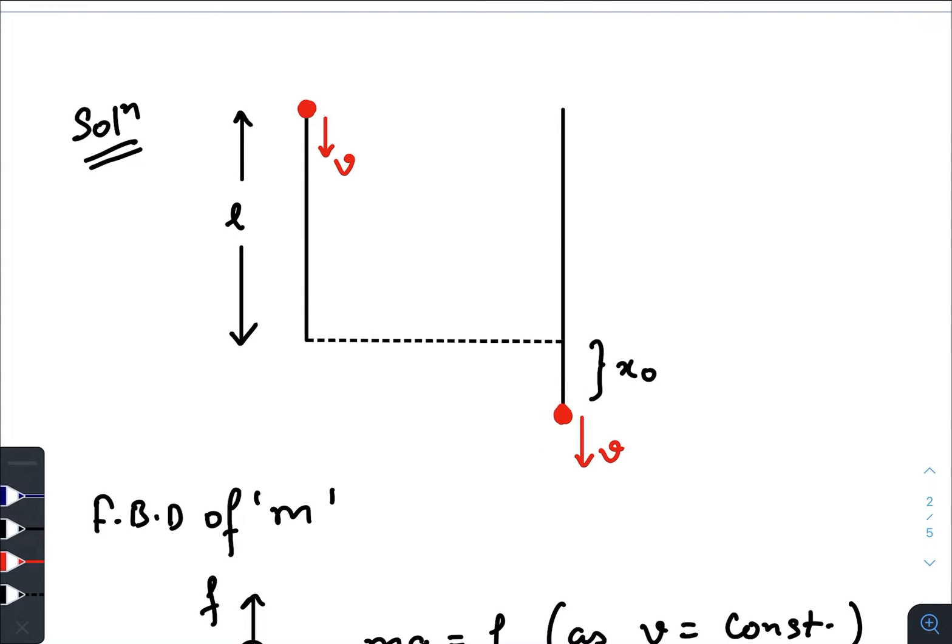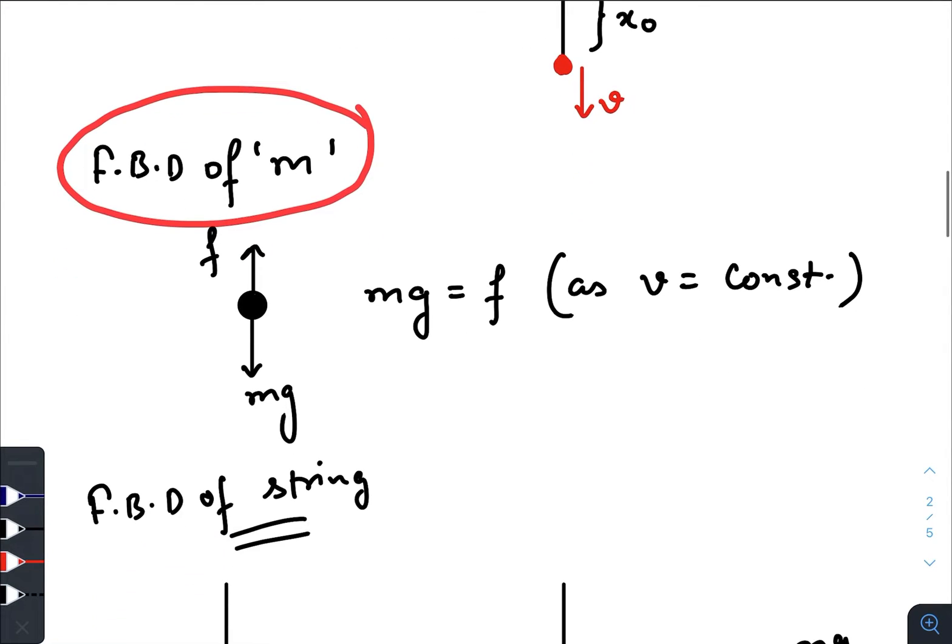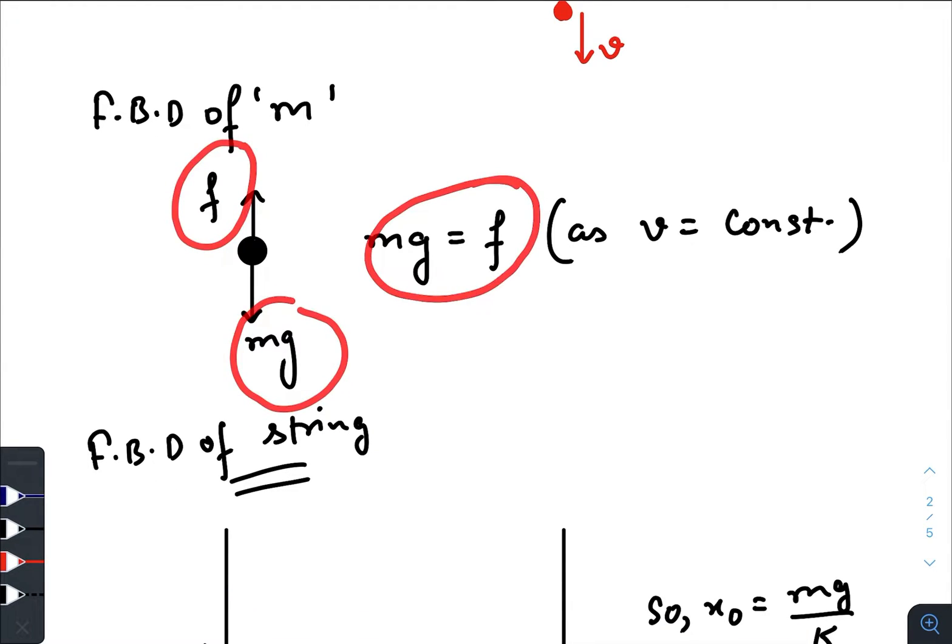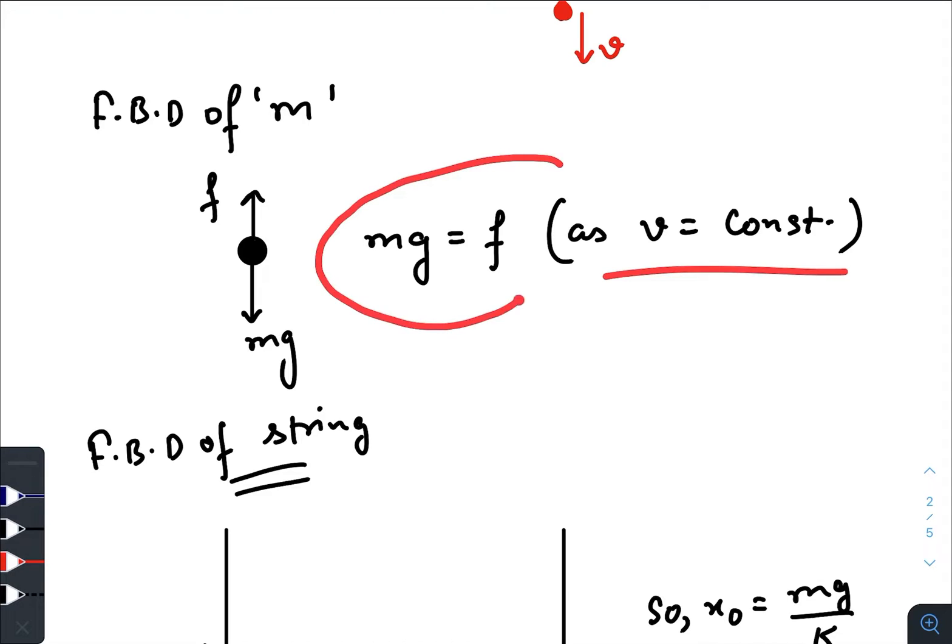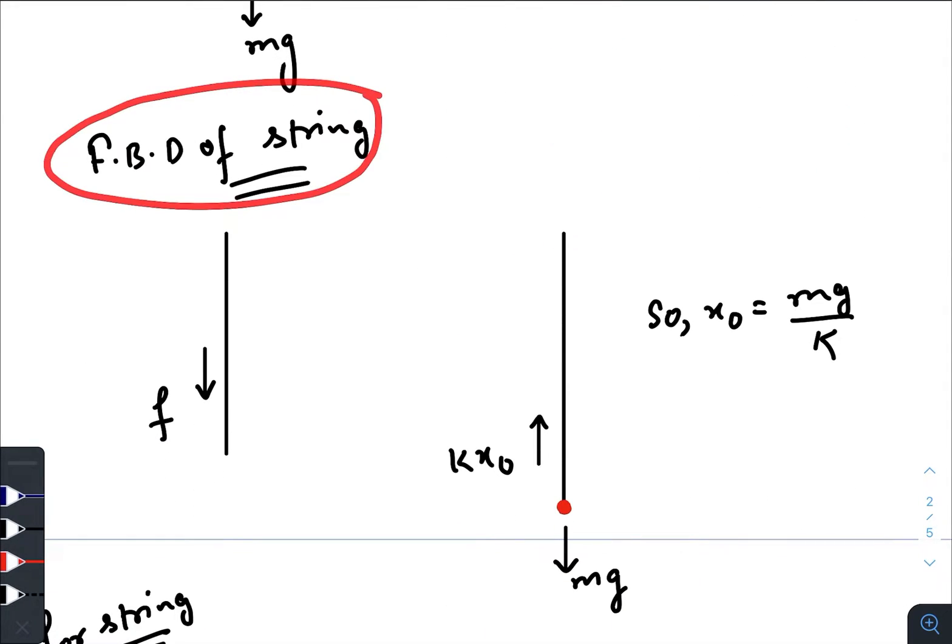Now from the free body diagram of the mass M, we can write that the gravitational force is balanced by the frictional force, so MG equals to F, as V is constant. We will keep this in mind.